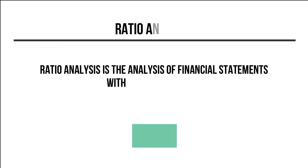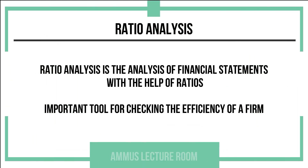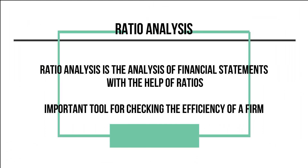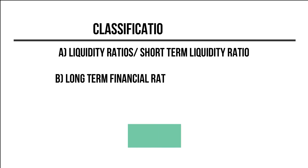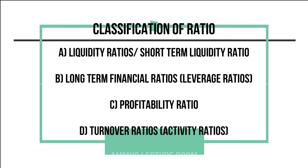Ratios help in a firm's financial statement analysis — this is called ratio analysis. It is one important tool to check a firm's efficiency. Ratios are mainly classified into 4 types.